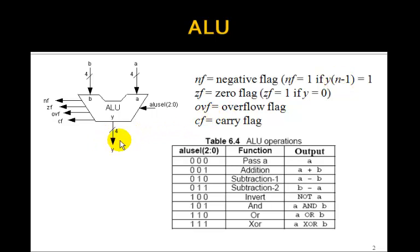That is, if the output Y is a two's complement negative number. So if Y sub N minus one is equal to one, we set the negative flag. That tells that the result was negative.